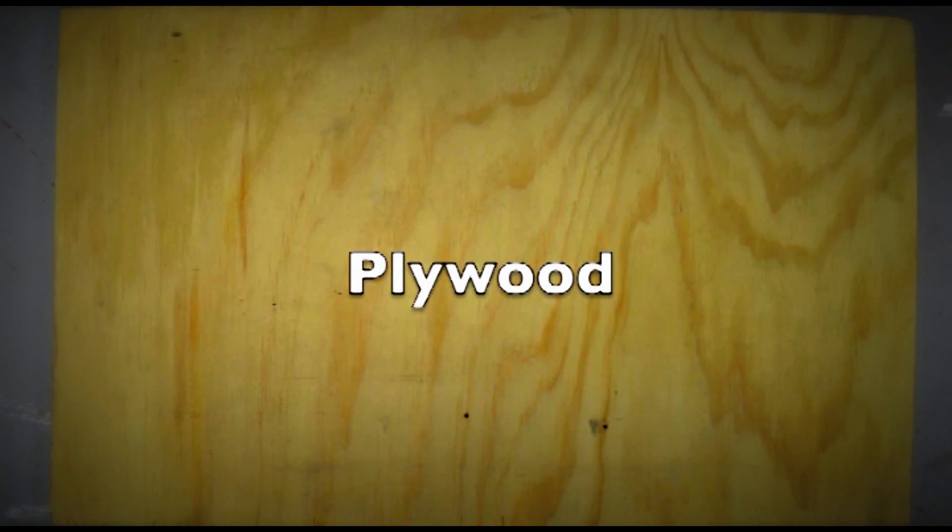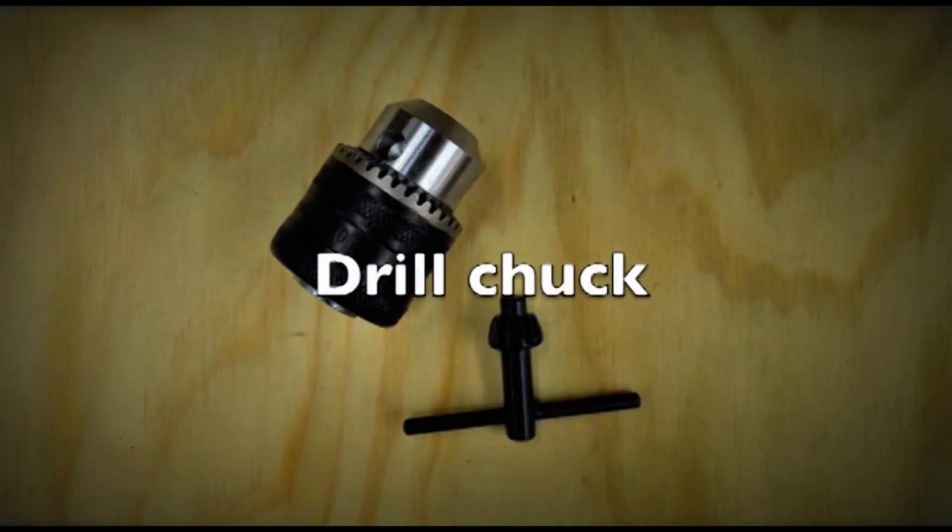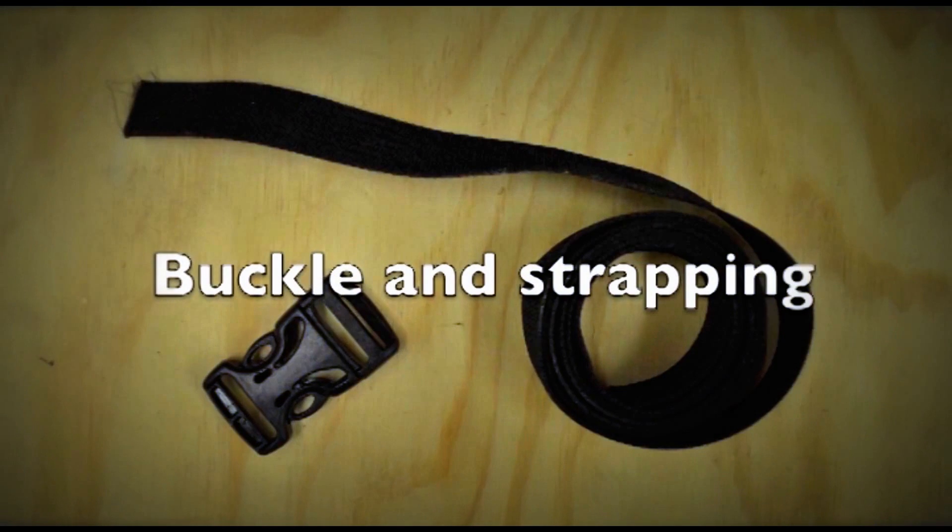A piece of 5/8 inch plywood about 12 inches by 16 inches. A piece of clear polycarbonate. A 3/8 inch drill chuck with a chuck key. Four 2 inch by 1/4 inch bolts. Eight 1/4 inch washers and four 1/4 inch nuts.